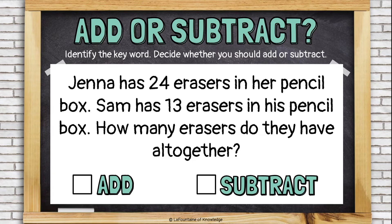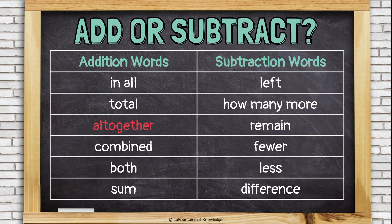Jenna has 24 erasers in her pencil box. Sam has 13 erasers in his pencil box. How many erasers do they have all together? The word 'all together' usually means to add. Just like the word 'combined,' it means to put things together, which is what addition is. All together is an addition word.